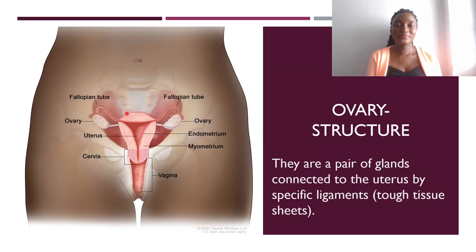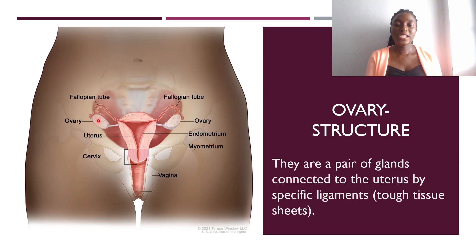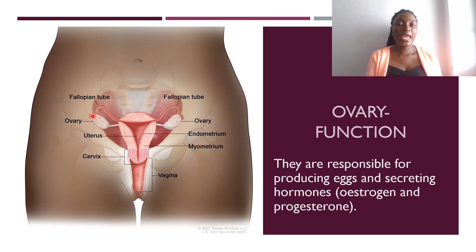The ovaries are a pair of glands — one on each side — connected to the uterus by specific ligaments, which are tough tissue sheets. They are responsible for producing eggs and secreting hormones, specifically estrogen and progesterone. The fallopian tubes are also a pair, with one going to the left and one to the right.